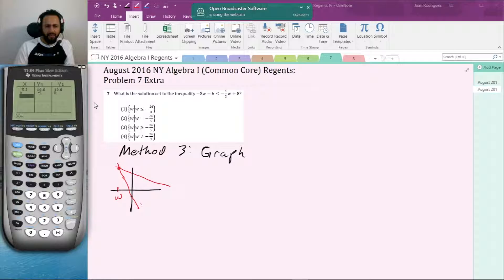So whichever of these contains 0 is a correct answer. 0 is not less than negative 26 over 5, nor equal. 0 is not equal to negative 26 over 5. 0 is greater than or equal to negative 26 over 5.